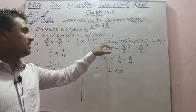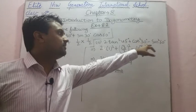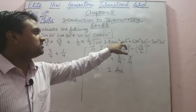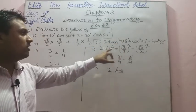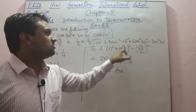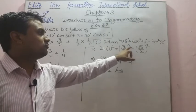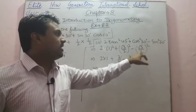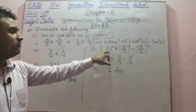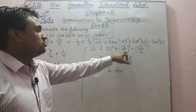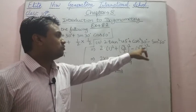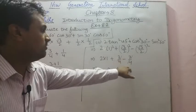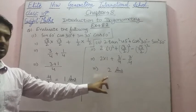The second part: 2tan²45° + cos²30° − sin²60°. Putting values directly: 2 × (1)² + (√3/2)² − (√3/2)². Solving: 2 × 1 = 2, plus 3/4, minus 3/4. The 3/4 terms cancel each other, leaving 2 × 1 = 2. So the answer is 2.